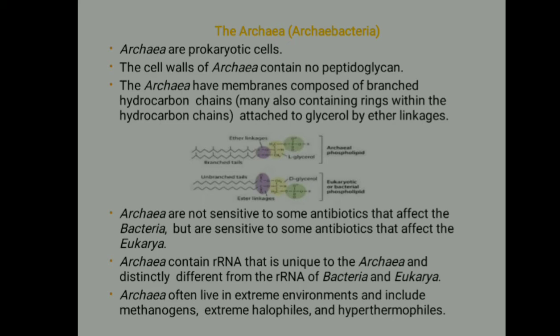First, we have Archaea. Archaea are prokaryotic cells. The cell wall of Archaea contains no peptidoglycan. Archaea have membranes composed of branched hydrocarbon chains. Many also contain rings within the hydrocarbon chains attached to glycerol by ether linkages. They are sensitive to some antibiotics that affect bacteria but are also sensitive to some antibiotics that affect eukaryotes. They contain rRNA unique to Archaea, different from that of bacteria and eukaryotes. Archaea often live in extreme environments and include methanogens, extreme halophiles, and hyperthermophiles.